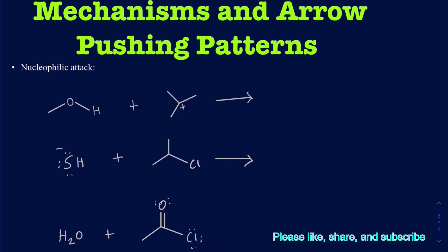The first type of pattern is where you're going to have a nucleophile attacking something. A nucleophile is something that's going to have a lone pair of electrons or a negative charge, and it's going to be attacking an electrophile, which has a positive center. In this case, the oxygen, since it's carrying the electrons, is going to be your nucleophilic center, and the positive charge on the carbon is going to be your electrophilic center. So the arrow goes from the nucleophilic center to the electrophilic center.